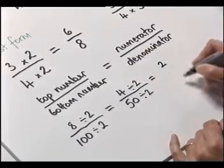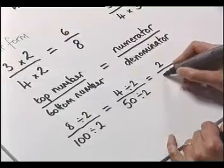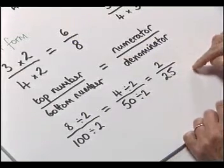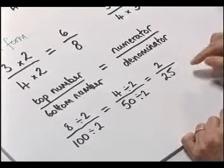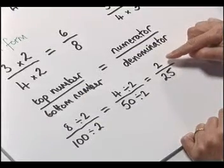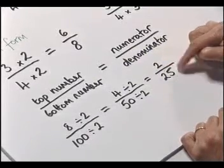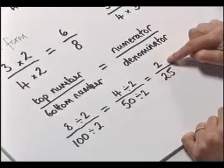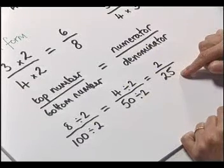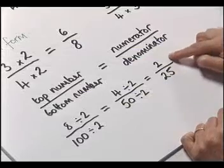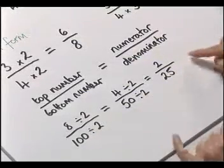Now we need to look at our fraction again. We found an equivalent fraction, but is it in its lowest form? Well again, both four and fifty are even, so we can divide by two again. Four divided by two gives us two, and fifty divided by two gives us twenty-five. But is it in its lowest form? The only numbers that go into two are one and two — and two doesn't go into twenty-five. So we've found the fraction in its lowest form: eight one-hundredths in its lowest form is two twenty-fifths. When a fraction is in its lowest form, the only number that goes into both the numerator and denominator is one — those numbers have no other common factor.